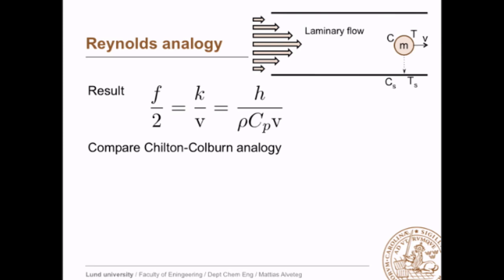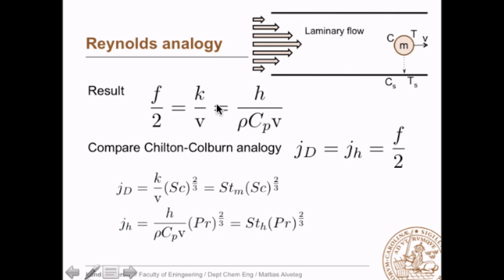We end up with f/2 = k/v = h/(rho*cp*v), where we have our three transport coefficients f, k, and h. We can compare this with the Chilton-Coburn analogy, where jD = jH = f/2. Here jD = (k/v) times Sc^(2/3), so if Sc equals 1, we simply have k/v. And jH = h/(rho*cp*v) times Pr^(2/3), so if Pr equals 1, we have the same thing. So if both Sc equals 1 and Pr equals 1, then Chilton-Coburn's analogy simplifies to Reynolds' analogy.